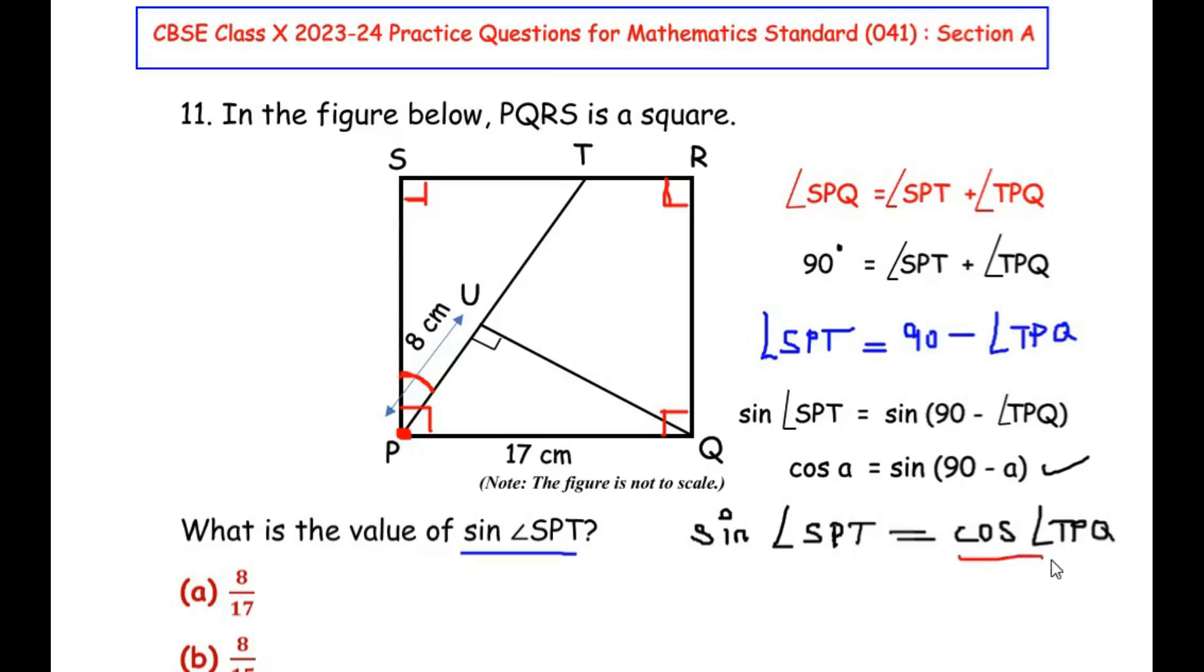Now once I have written this, I have to find out what is the value of cos TPQ. To find the cosine of this angle TPQ, I am going to consider the triangle UPQ. Let me redraw this right angle triangle.